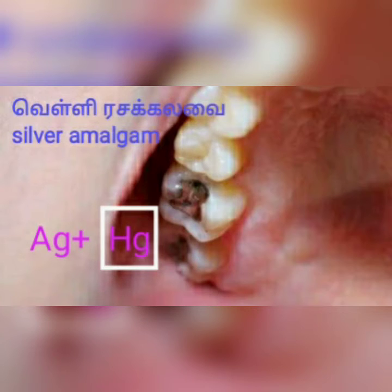Mercury with silver, it is called silver amalgam. Mercury with sodium, it is called sodium amalgam. The silver amalgam is used to fill the cavity in the teeth in dentist industry by dentist.